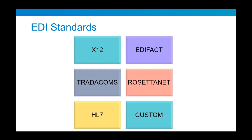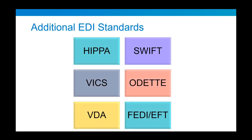At the time of this recording, Boomi supports the following EDI standards: X12, one of the most popular, verified by the ANSI ASC (Accredited Standards Committee); EDIFACT, used primarily in European countries; TRADACOMS, a precursor to EDIFACT; RosettaNet, which is XML-based; HL7, used in healthcare by doctors' offices and hospitals; and Custom, which you define. Additional industry-specific standards include HIPAA for health insurance, ODAS for European telecommunications, and VDA for the German automotive industry.